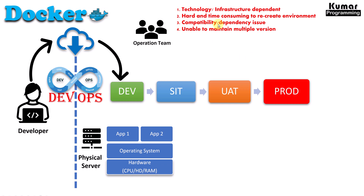There were also compatibility and dependency issues. Maybe the developer worked on Node 16 but the infrastructure was running Node 18, so some functionality can break. Or suppose application one is running on Node 16 and another application requires Node 18, but the OS has Node 16 installed — so that second application cannot run. The operations team was unable to maintain multiple versions, and running one application on Node 16 and another on Node 18 was simply not possible in this infrastructure.